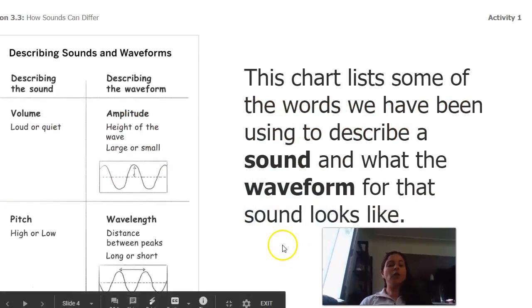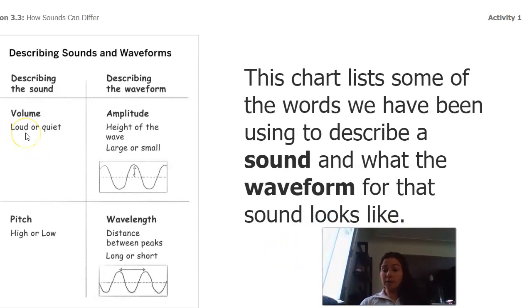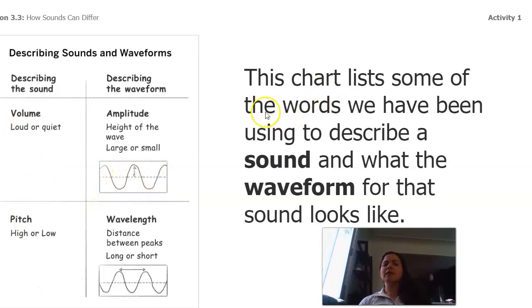You probably remembered that we know that sounds can have different volumes, and we know that sounds can have different pitches, and that does different things to the waveform. This chart lists some of the words we've been using to describe a sound and what the waveform for that sound looks like.